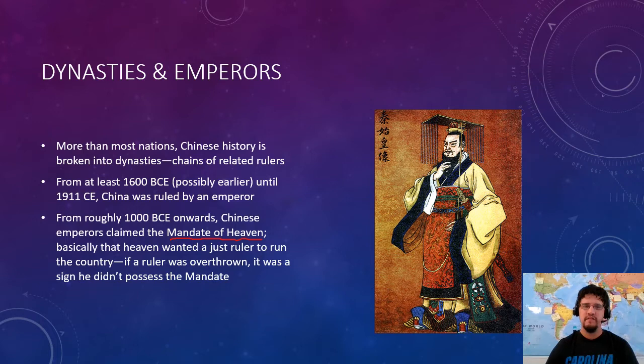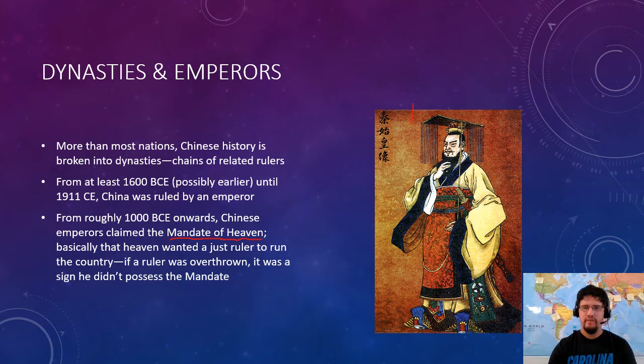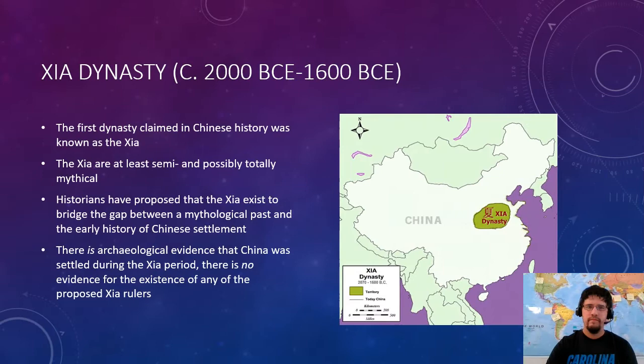The Mandate of Heaven means that the gods — the powers that be in heaven — desire a just ruler to run the country. If a ruler is overthrown, clearly he didn't have the mandate, so it's okay to overthrow him. That's a pretty tenuous position to put yourself in as a leader, but it also means that if you are running the country well, clearly heaven likes you. Also, Chinese emperors got a very sweet hat — I very much like that hat.